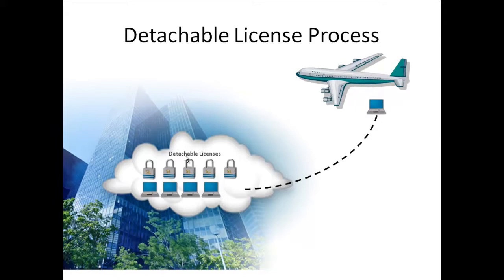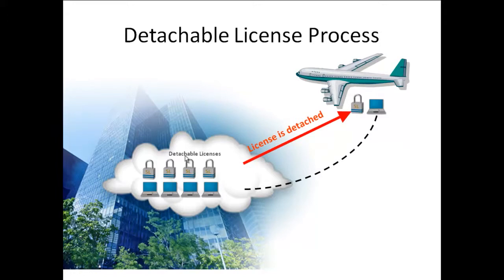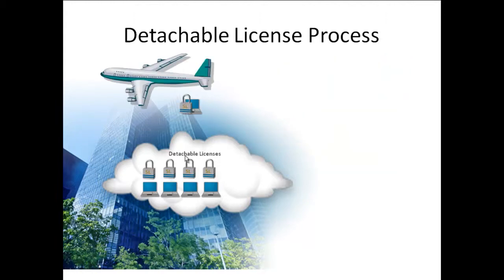So the process would be like this: the laptop will go away, and we can detach an SL key from the pool of licenses. This SL key is sent into the laptop, and then the employee or owner of this laptop will take this SL key and install it. He will then have on his machine an SL key with the license, so he can fly abroad with the license on his laptop.